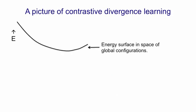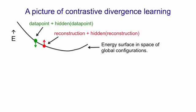So here's a picture of what's going on. Here's the energy surface in the space of global configurations. Here's a data point on the energy surface. And by data point, I mean both the visible vector and the particular hidden vector that we got by stochastically updating the hidden units. So starting at that data point, we run the Markov chain for one full step to get a new visible vector and the hidden vector that goes with it. So a reconstruction of the data point plus the hidden vector that goes with that reconstruction.